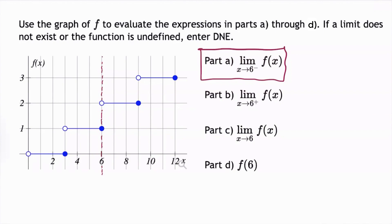To find the limit as x approaches 6 from the left, we hop on the graph and approach 6 from the left, and y is always 1. So the limit as x approaches 6 from the left is 1.